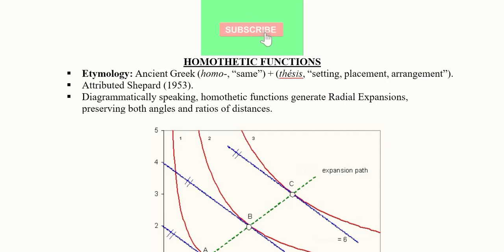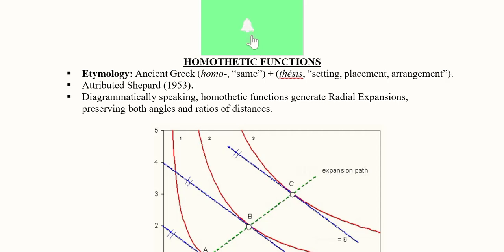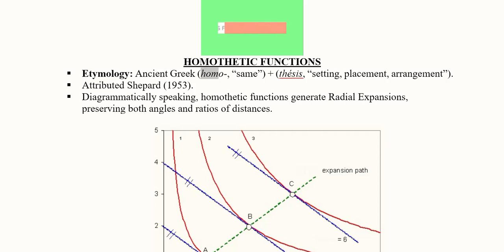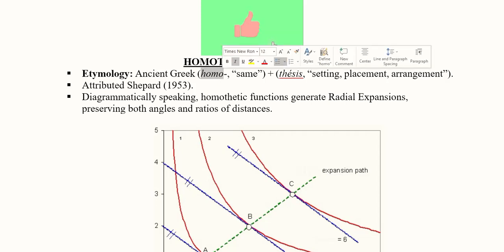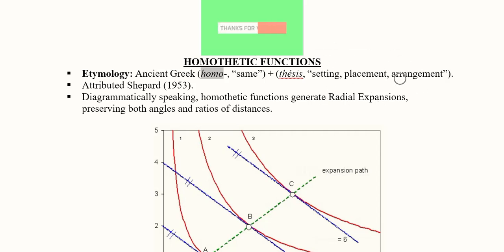Primarily we'll do the etymology of it. It is basically an ancient Greek word made of two parts: 'homo' means same, and 'thesis' means setting, placement or arrangement.